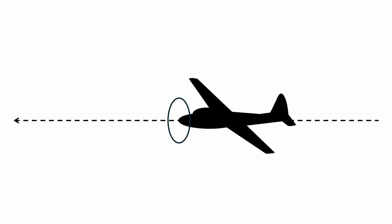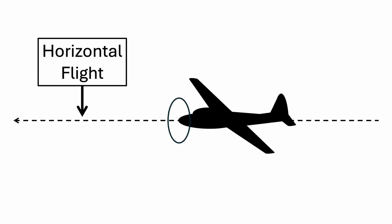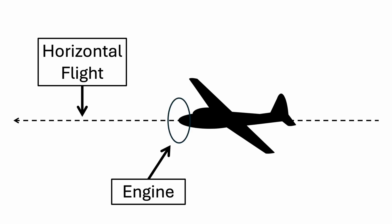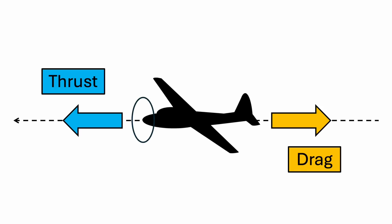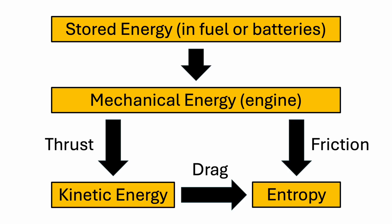Now we know how energy flow works for gliders, but what about powered airplanes that have engines? Energy flow for a powered airplane is similar, except that the airplane is assumed to be flying horizontally instead of on a glide slope, thrust is provided by an engine instead of gravity, and energy is provided by batteries or fuel. Since the plane is flying at a constant speed without gaining or losing altitude, the force of thrust is still assumed to be equal to the force of drag. Energy stored in fuel or batteries is converted to mechanical energy in the engines, and in powered airplanes, more energy is also lost to entropy in the engine when it is converted into noise and heat by friction.